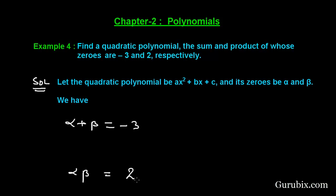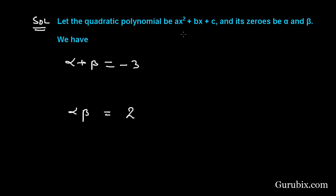We know that if our quadratic equation is of the form ax² + bx + c, then the sum of zeros equals -b/a and the product of zeros equals c/a.